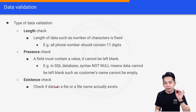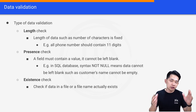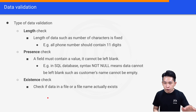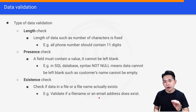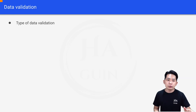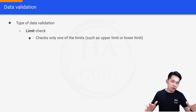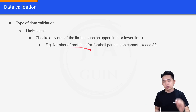We also have existence check, which checks if data in a file, or a file name, actually exists. For an existence check, most of the time you are just checking whether a value exists. For example, we can validate if a file name or an email address does exist using an existence check.